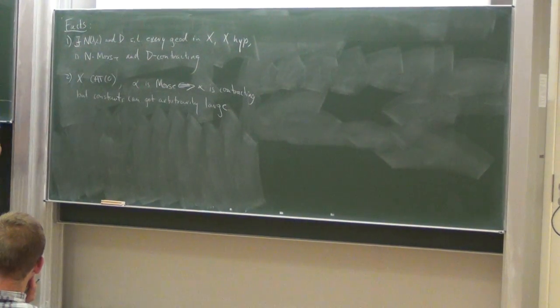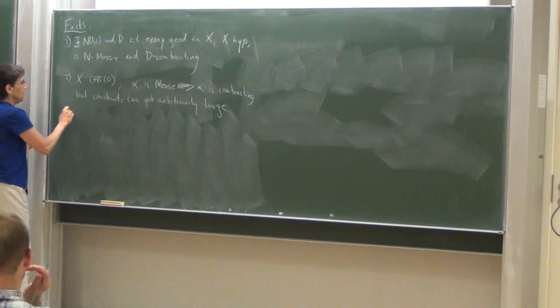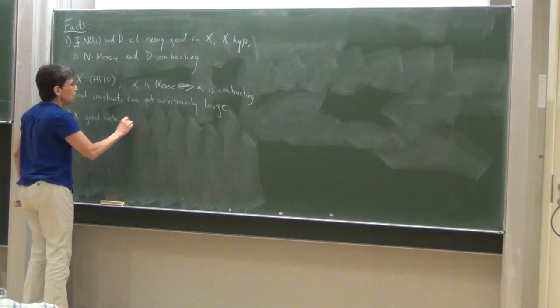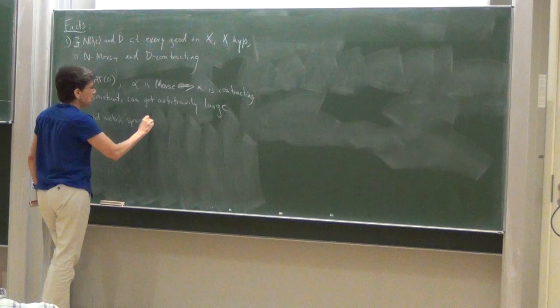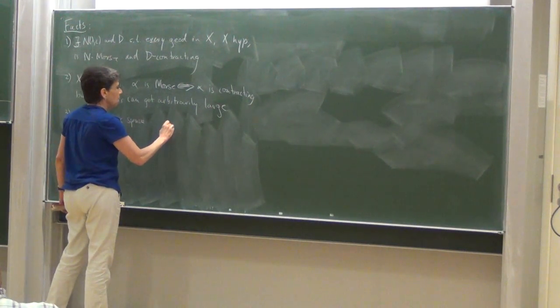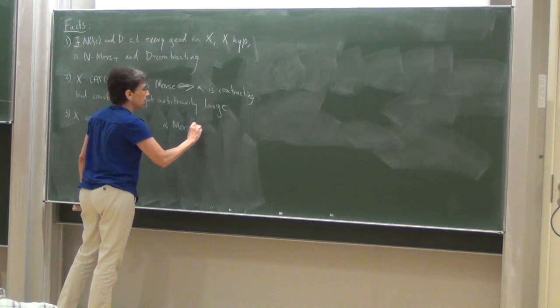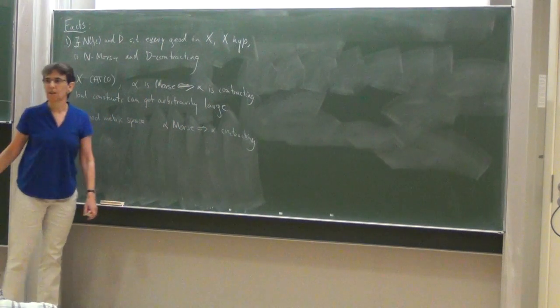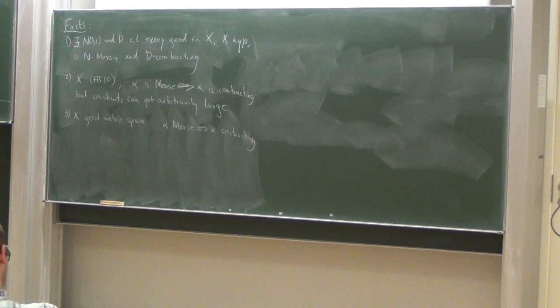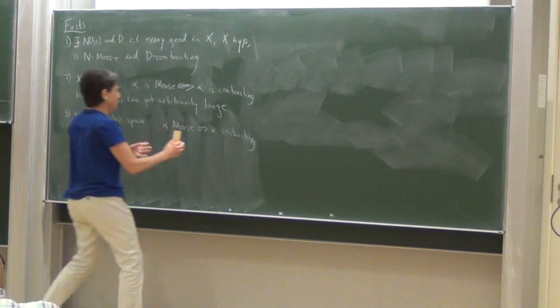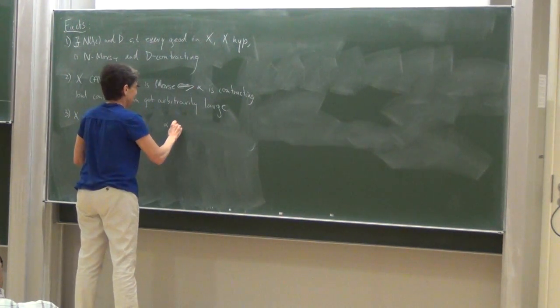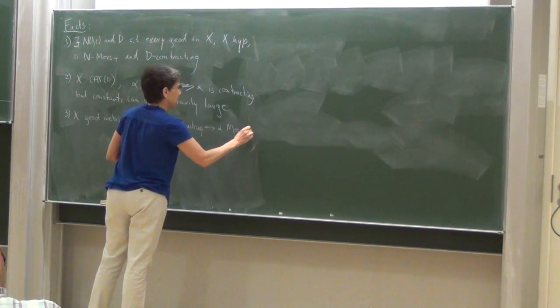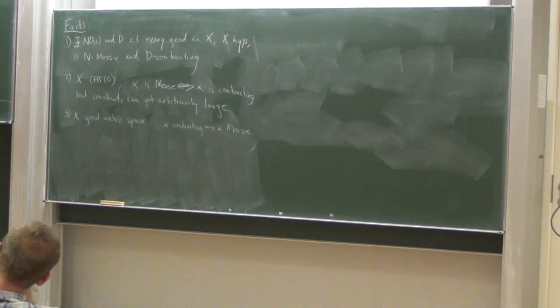We see already that things are going wrong here. If we move past this to things that are not CAT(0), so finally X, an arbitrary geodesic metric space, in general, we get alpha contracting implies Morse, but not the other way around. You lose the equivalence. Okay, so let's just look at one example. I'm going to come back to these examples later, but just so you have a picture in your head. And as I said, this is the case we're mostly going to be focused on, primarily going to be focusing on.